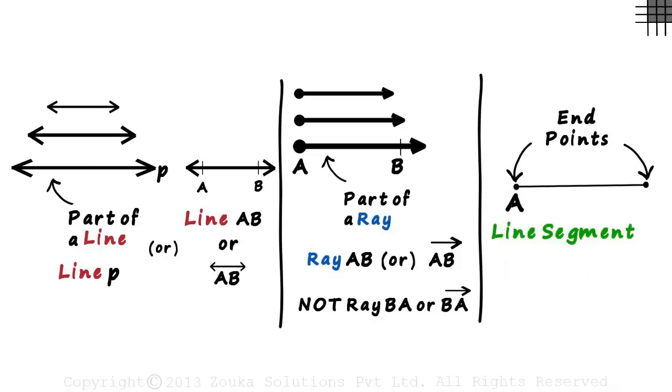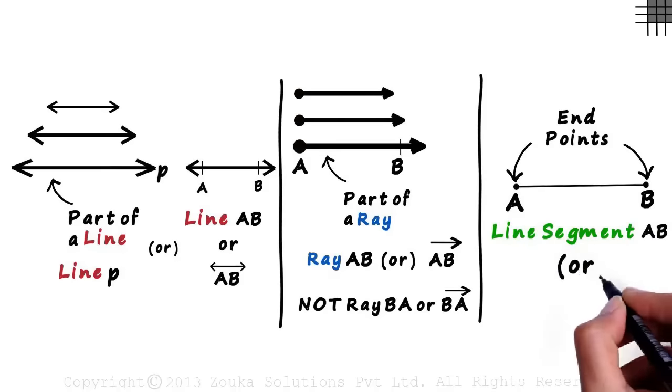If the end points are A and B, this can be called line segment AB. Or it can also be written as AB with a line segment over it.